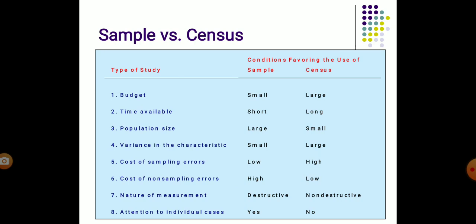Now we compare sample versus census. Regarding budget, a small budget favors a sample survey, while a large budget allows a census. For time availability, a sample requires less time while a census requires more. Regarding population size, when the population is large — such as understanding customer preference for Coke across an entire city — a sample survey is more preferable.